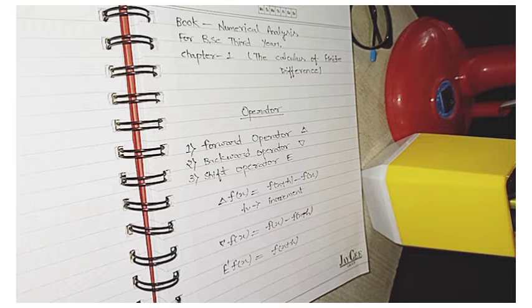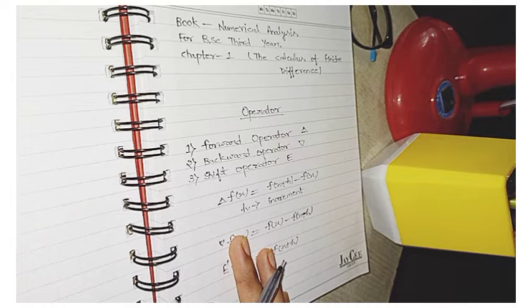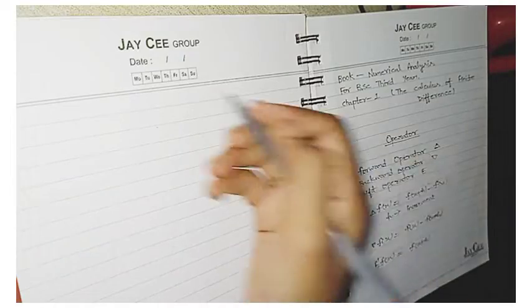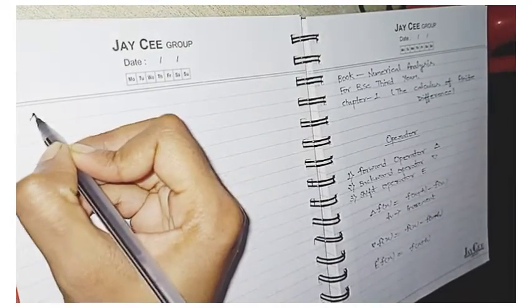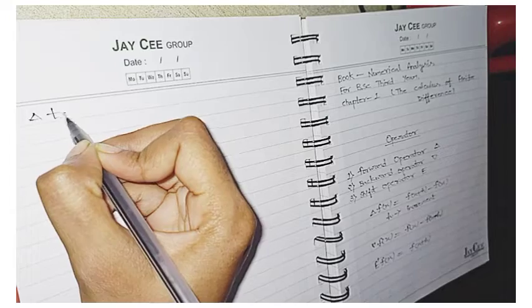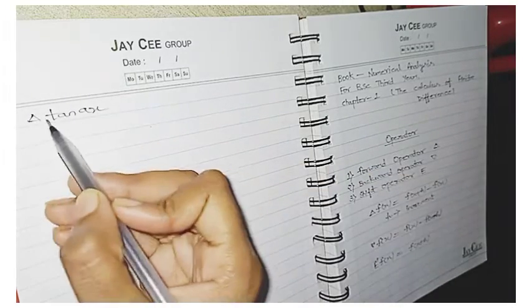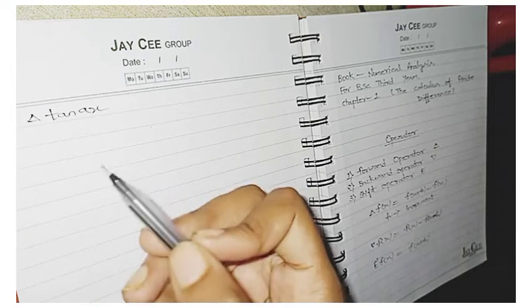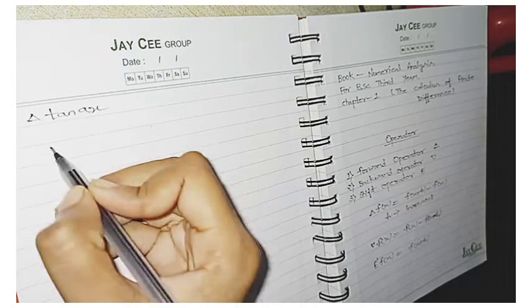I take a question. And with that help, I will explain how this operator will operate. So now the question is, this is the question of your book. If you have book, then you can check it. So here is del. So you can see that it is del. Del means this is the forward operator. So you need to use the formula of forward operator.